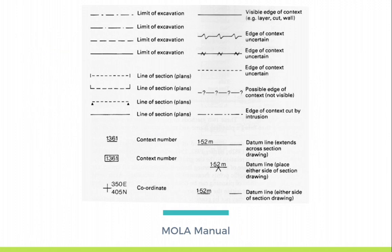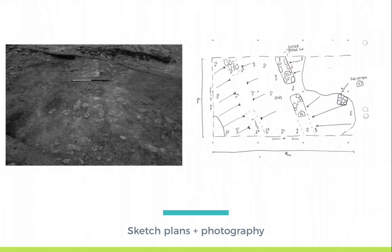This is a page from the Museum of London Manual on how to draw context plans. We will revisit these next week, but as the next slide demonstrates, it is helpful to understand how the photograph on the left is related to the drawing on the right, and why they are both necessary for transmitting archaeological interpretations.